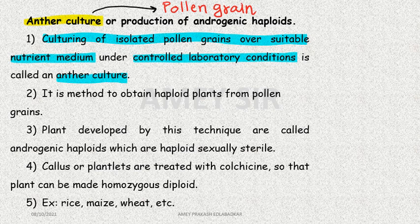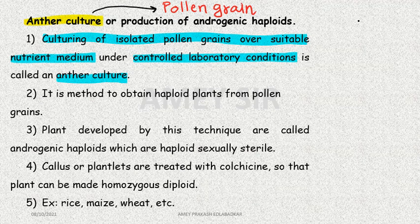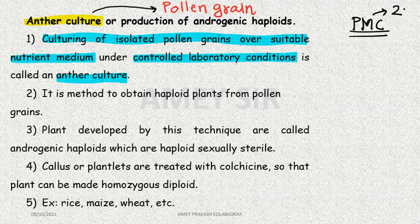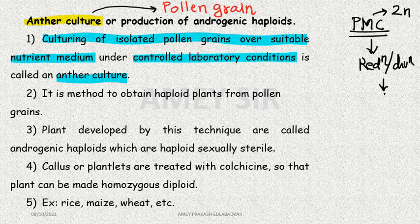If you have seen the video on the internal structure of anther in Chapter 1, the outermost layer is epidermis, followed by endothecium, then middle lamella, then tapetum, and then inside comes the pollen mother cell. All structures up to pollen mother cell are 2N, i.e., diploid. Through reduction division — meiosis — the pollen mother cell produces pollen grains, and pollen grains are always haploid in nature.